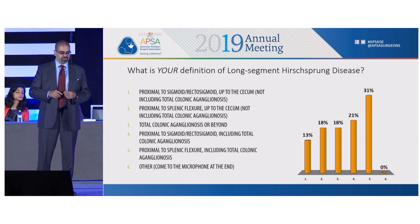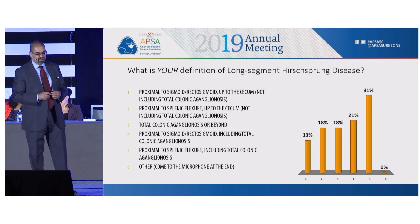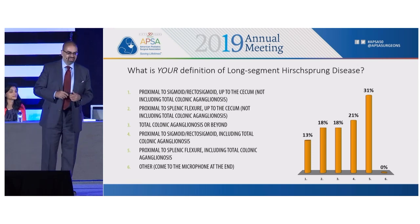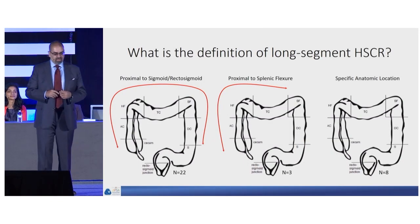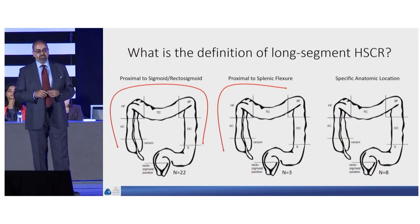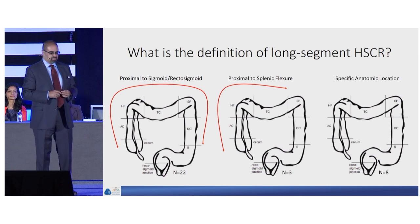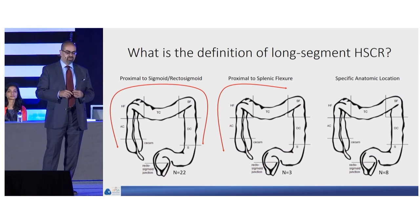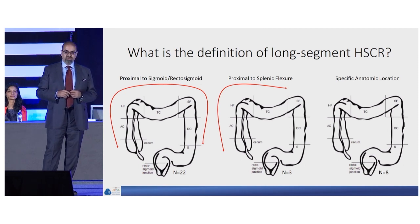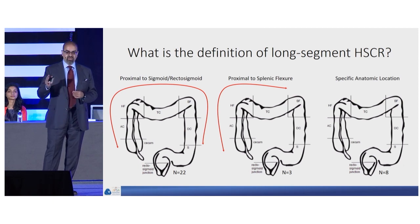Most people say it's proximal to splenic flexure, including total colonic aganglionosis. Let's see if they're right. According to the literature, we found 33 studies that defined this well in their approach. As you see them left to right, there were 22 studies that defined it as proximal to the sigmoid or recto-sigmoid, three that defined it as proximal to the splenic flexure, and eight that defined it based on specific anatomic location, meaning transverse colon, hepatic flexure, or ascending colon.